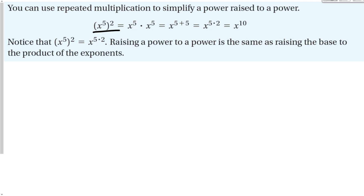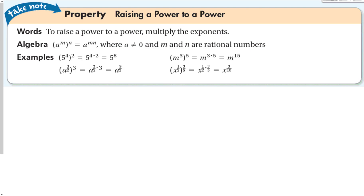We start with x to the 5th squared, which means x to the 5th times x to the 5th. From 7-2, we know that we can add the exponents together since they have the same base: 5 plus 5, which is really the same as 5 times 2. So x to the 5th squared equals x to the 5 times 2 power — raising a power to a power is the same as raising the base to the product of the exponents.